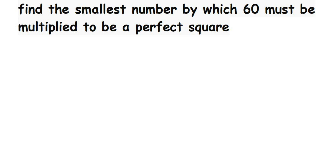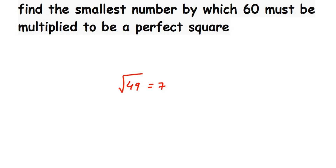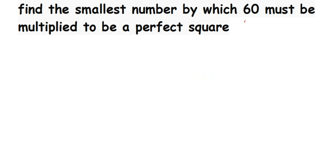Here's a question from squares and square roots: find the smallest number by which 60 must be multiplied to become a perfect square. 60 is not a perfect square. A perfect square is a number where you can find the square root easily — for example, 49, because square root of 49 is 7 (49 = 7×7). Similarly, 16 is a perfect square because 16 = 4×4. We have to multiply 60 by the smallest number to make it a perfect square.